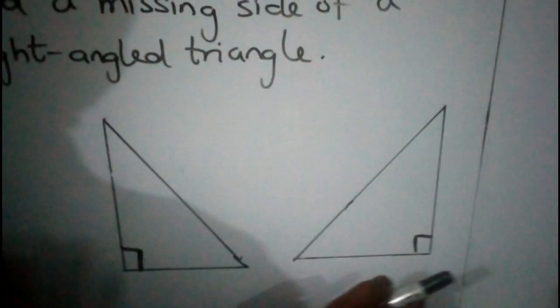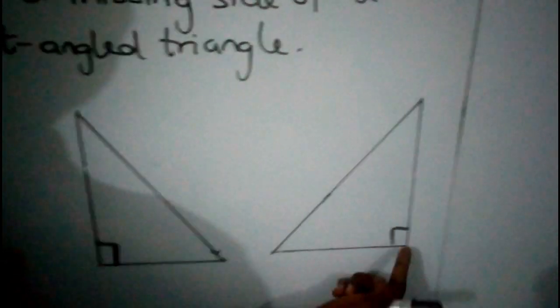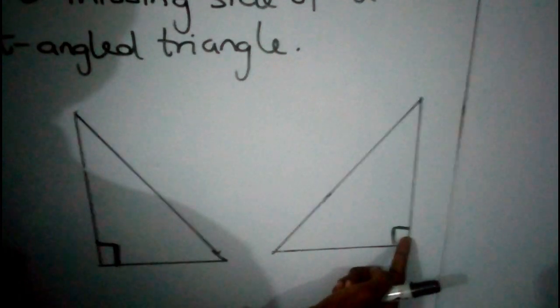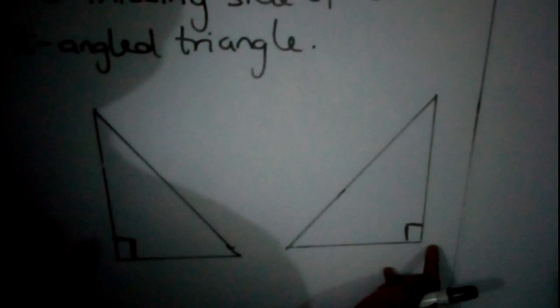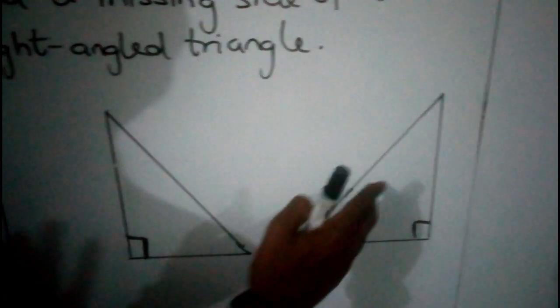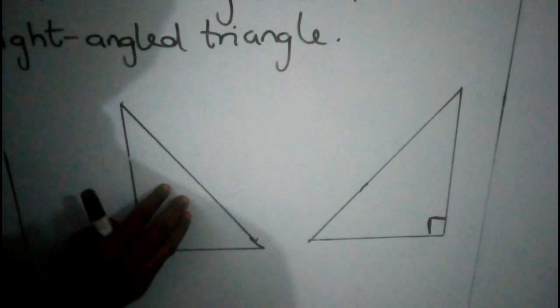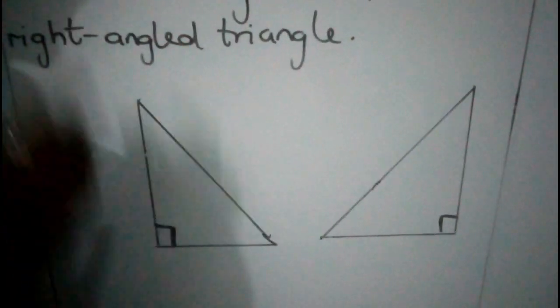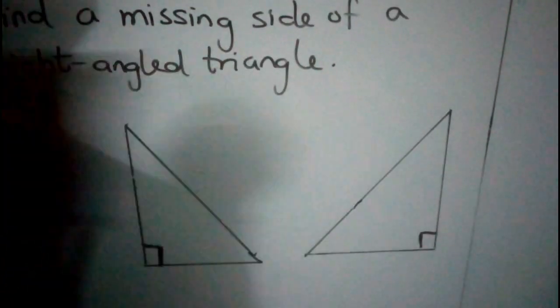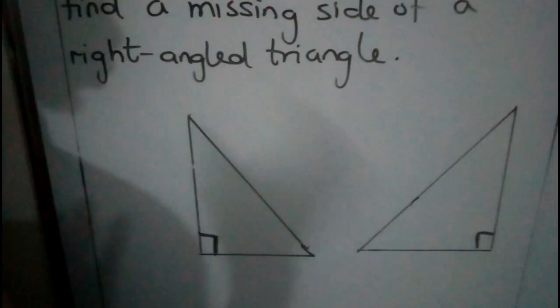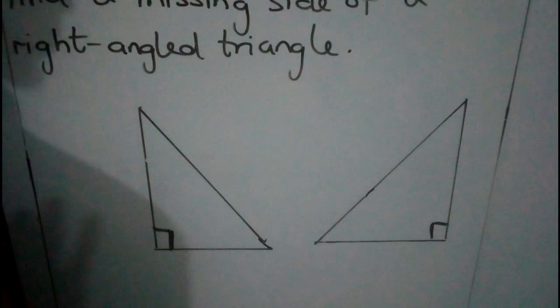It can also come in this form — the right angle is on this side. A right angle is formed by a vertical and horizontal line meeting, called a perpendicular line. So this is also a right-angled triangle. We only use Pythagoras Theorem when one of these sides is missing or not known.